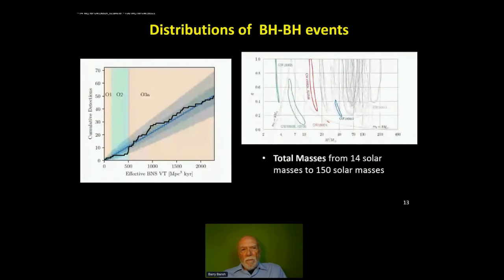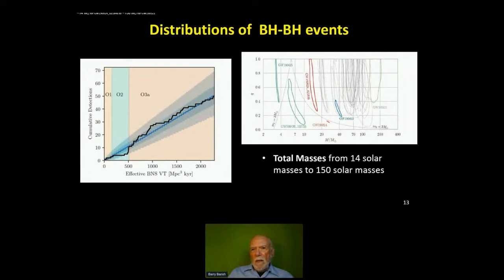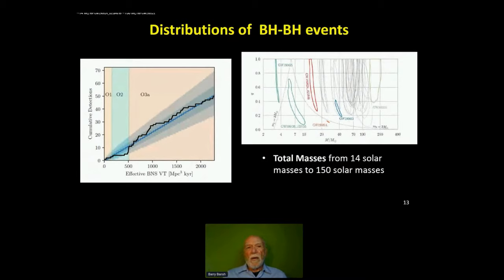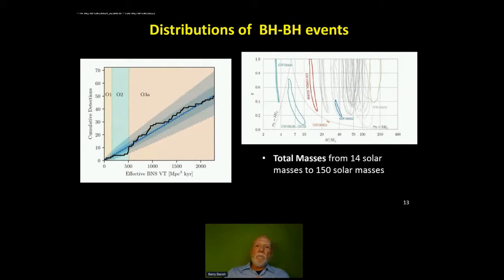We've now detected quite a few events through our data runs — observational runs one, two, and half of three. As we have increased the sensitivity of the detector, or the volume of the universe we look at, the number of events accumulated follows pretty well linearly with the increase in volume. As we increase the volume, we're going to higher redshifts. We see no indication so far of any physical effects that change the density of these sources in the range we look at, though we're at quite low redshift at this point.